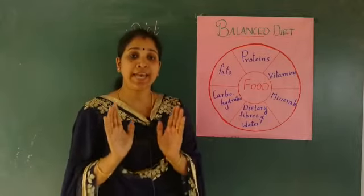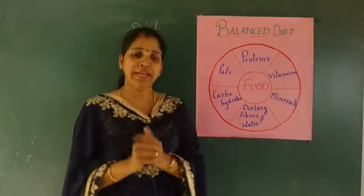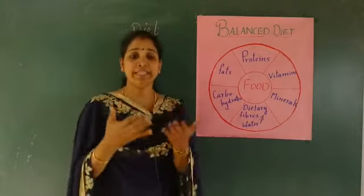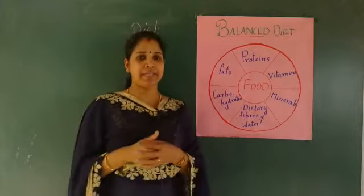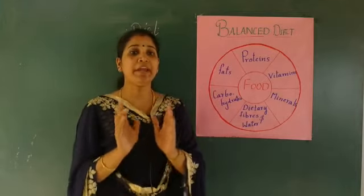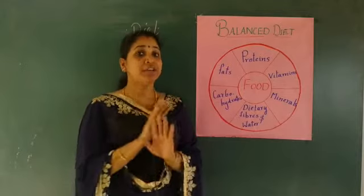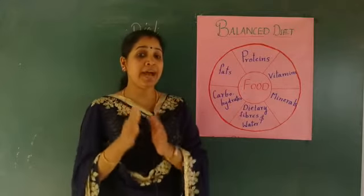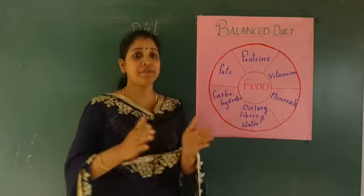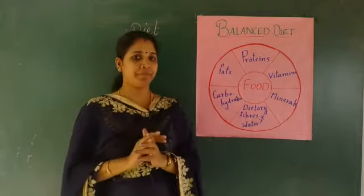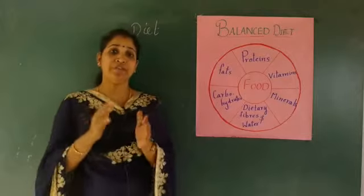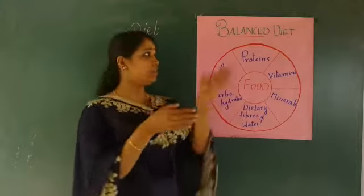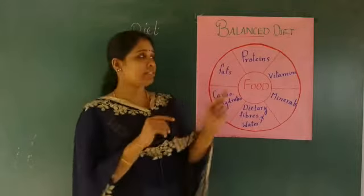With age, the balanced diet will also be different, because there are so many changes in our body and activities. Even at the same age, the balanced diet will be different — for example, the balanced diet for a girl should be different from the balanced diet for a boy. Balanced diet also differs from place to place and season to season. All these factors influence the balanced diet.